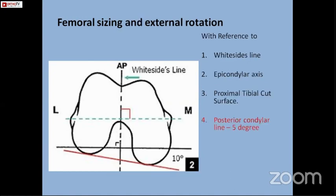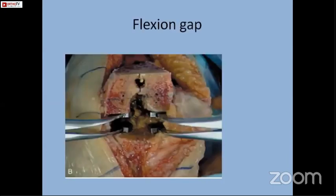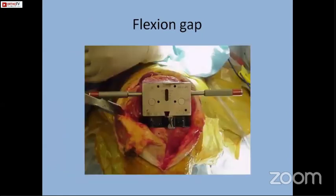If we are taking the posterior condyle as a reference, then the external rotation is to be compensated more by 2 degrees, so total external rotation will be 5 degrees due to the hypoplastic lateral femoral condyle. The line joining these two pins — the trial component — should be parallel to the trans-epicondylar line. We have to achieve a symmetric and rectangular flexion gap after taking the posterior femoral cut, which can be confirmed with parallelism to the cut surface in flexion.